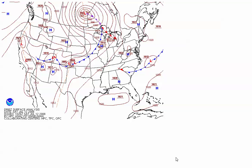When elevated convection forms on the cold side of an anafront, it's usually a warm front or a stationary front — those are the most common types of anafronts. But occasionally, cold fronts can be anafronts as well. This most often happens with a slow-moving cold front when winds aloft end up blowing back across the frontal boundary, creating overrunning on the cold side of the front.